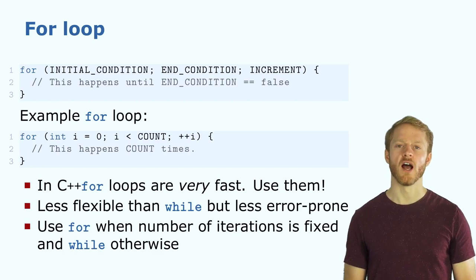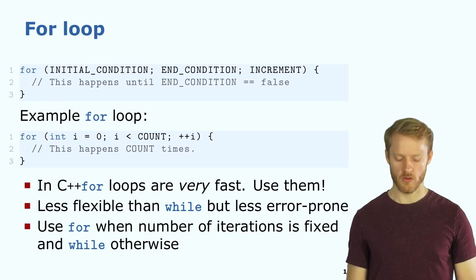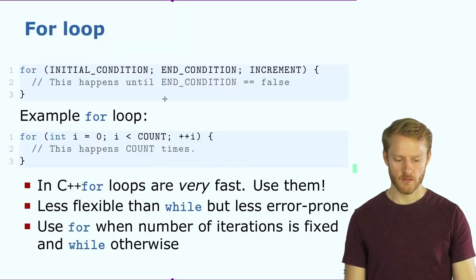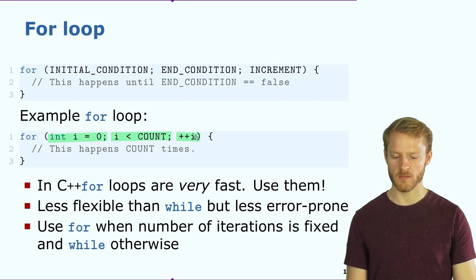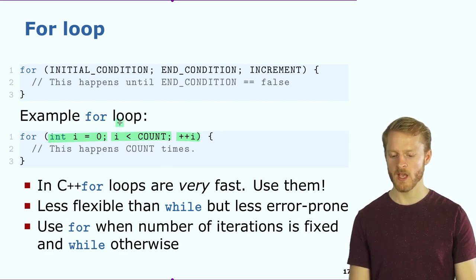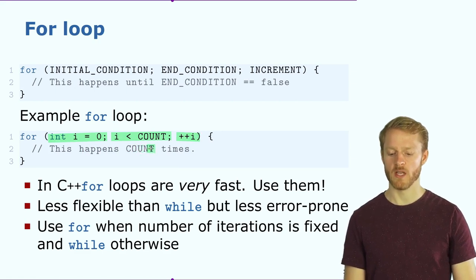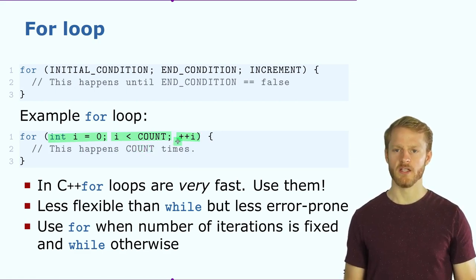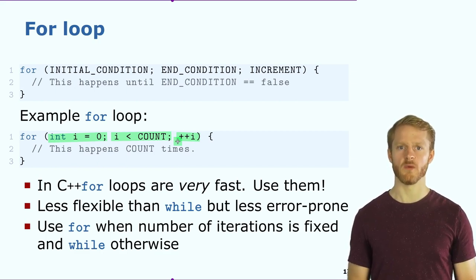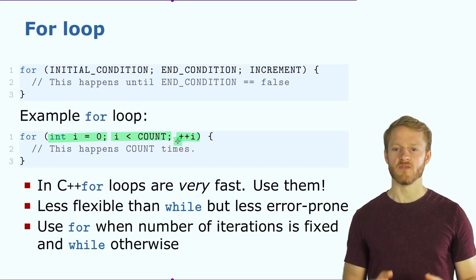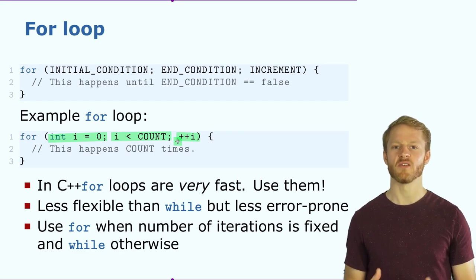When you know how many iterations you want, use a for loop. We specify the initial condition, the end condition, and how we want to increment the auxiliary variable — so this will happen a fixed number of times. C++ for loops are fast, so don't worry about using them. It's less flexible than while because you need to know the iteration count in advance, but it's fast. Whenever you know, use a for loop rather than a while with a counter.